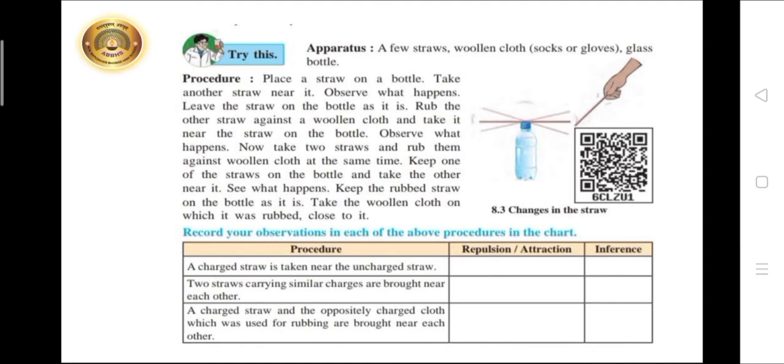When two straws carrying similar charges are brought near each other, then there will be repulsion. The inference is there is repulsion between like electric charges.